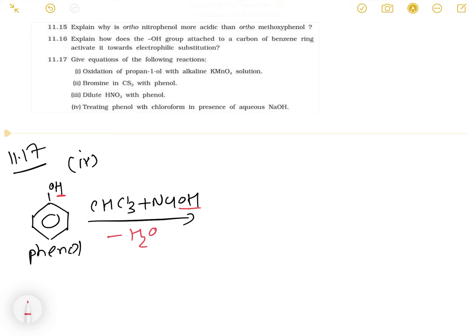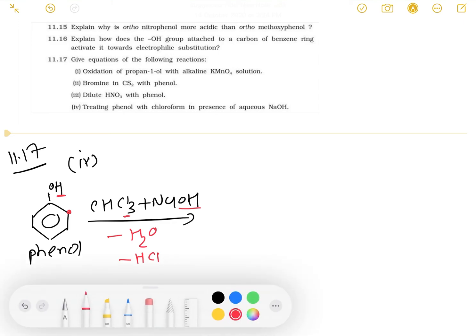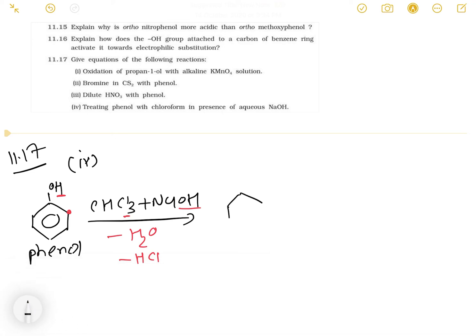The short method is easy to understand: we form ONa and CHCl2 intermediates. We then add 2 moles of NaOH. After the mechanism proceeds, we add H+ to protonate. We then add Cl and Na+ is removed in subsequent steps to give the final product.